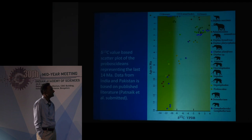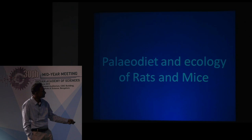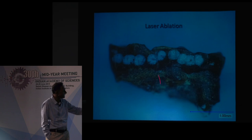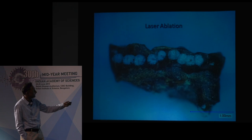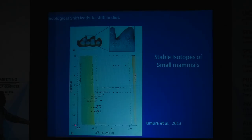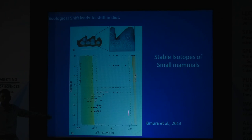We also worked on rats and mice. Because they are very tiny — just one millimeter — we used laser ablation techniques to extract enamel for stable isotope analysis. In a fossil record of 14 million years, we could see that early rats and mice were all C3 feeders, and as the ecology shifted, they became mostly C4 feeders.